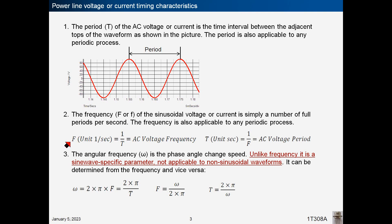Frequency is the reciprocal of the period, and one can be found from the other. The angular frequency, noted as omega, is the phase angle change speed. Unlike frequency, it is a sine wave-specific parameter, not applicable to non-sinusoidal waveforms. It can be determined from the frequency and vice versa through a factor of 2 pi.